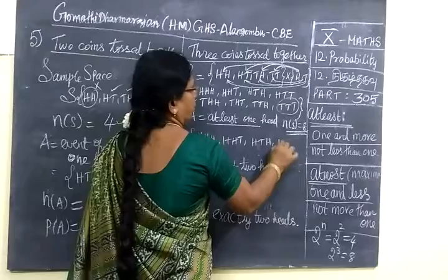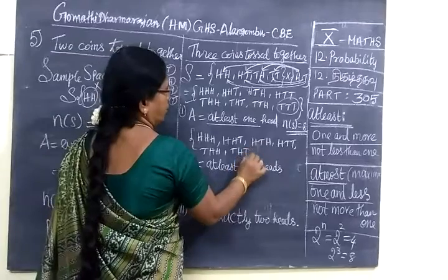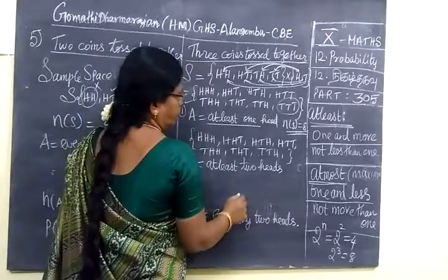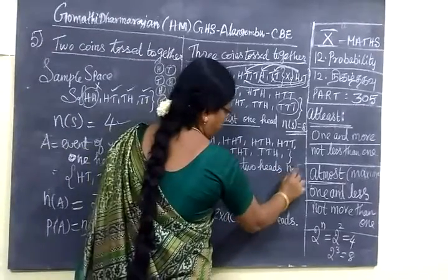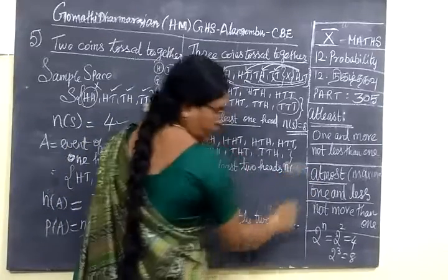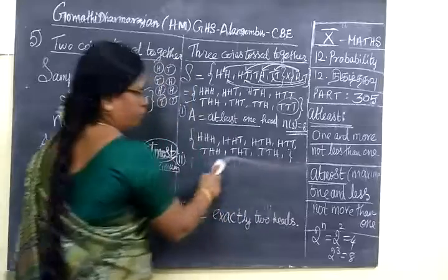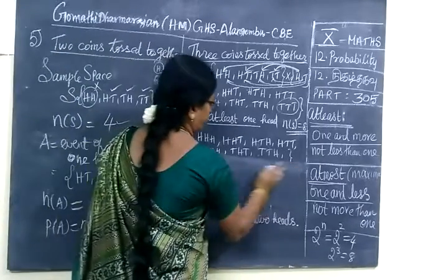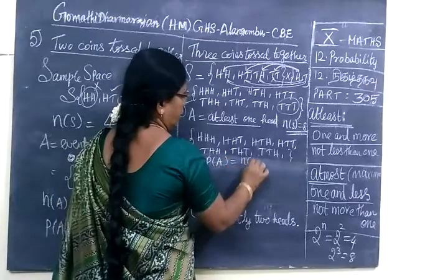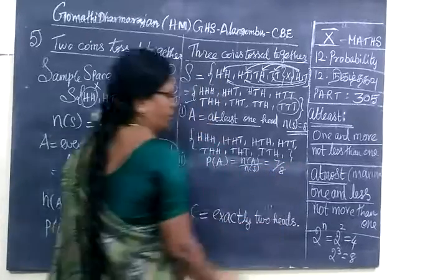Except T T T. Now here is at least one head. At least one head. Two heads also here. So in every way we can select except the last one. So now write the remaining: H H T, H T H, T H H, H T T, T H T, T T H. That's all. Now n(A) equals formula. Here n(A) equals 7. Isn't it? n(A) equals 7. So now we are writing P(A) equals n(A) by n(S) equals 7 by 8. Total number is 8.